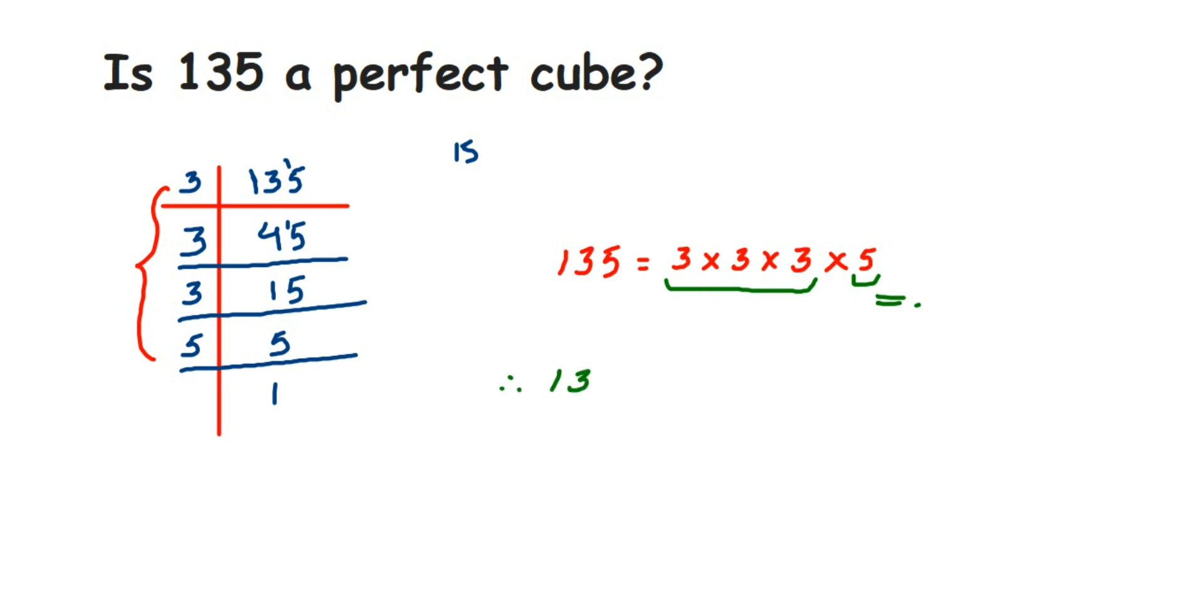So if there is a triplet of each of the factors, then we can say it's a perfect cube. Now here there are 2 more 5s missing. So we can say that 135 is not a perfect cube.